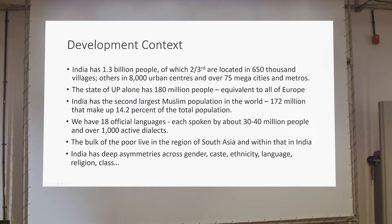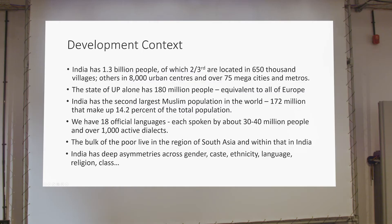So this is the development context — just to tell you, the scale of the country is huge. We are 1.3 billion people and two-thirds of these actually live in villages. We have urban centers of about 8,000, of which there are 75 megacities but which are overcrowded. There's a huge influx of people from rural areas in search of livelihood. The state of Uttar Pradesh, which is our largest state, alone has 180 million people — equivalent to the entire Europe.